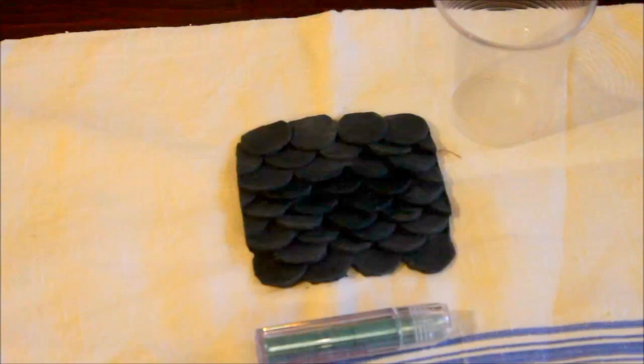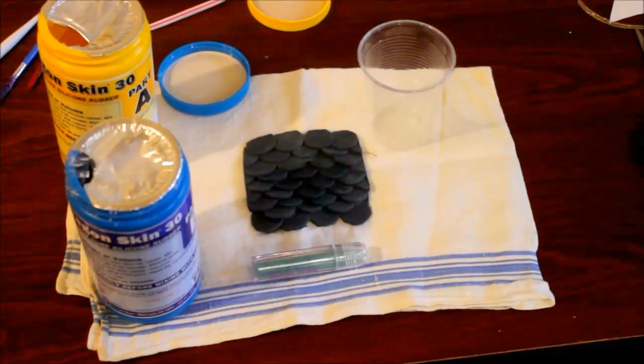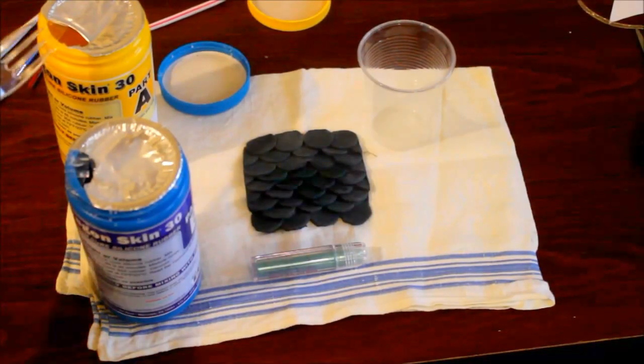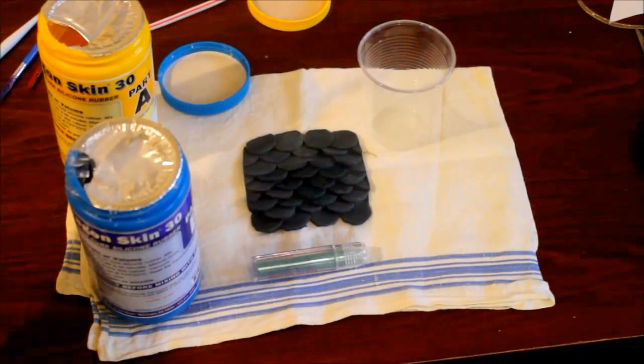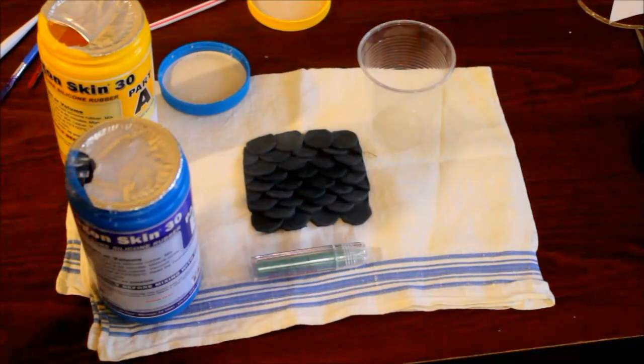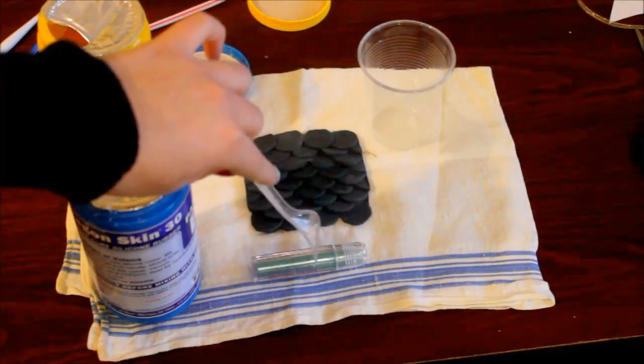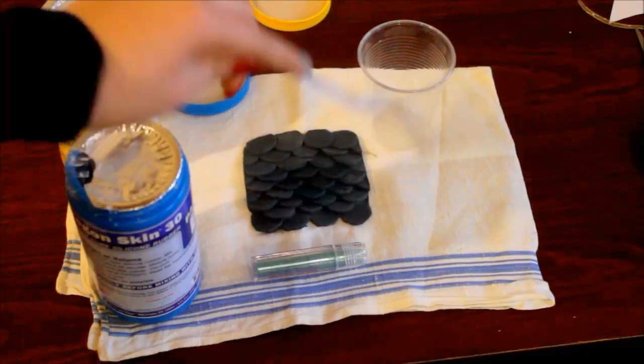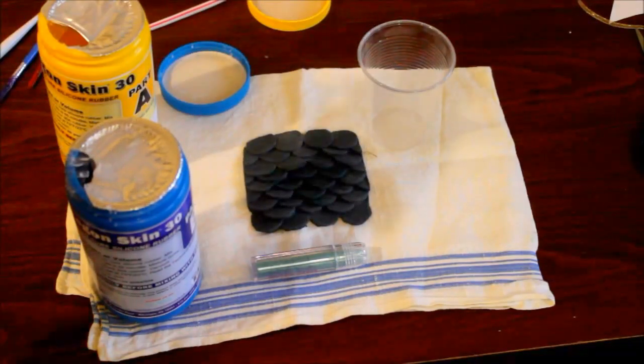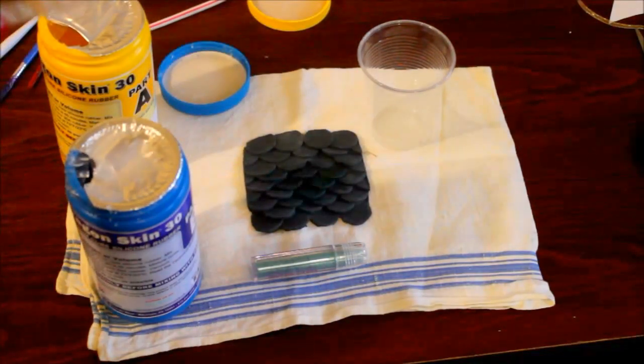So I'm going to start by taking just a little bit of each part of my silicone and putting it into the cup and then mixing that together. Then I'm going to add a bit of that shimmery pigment stuff and mix that all together.